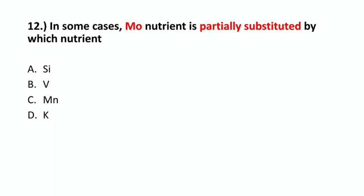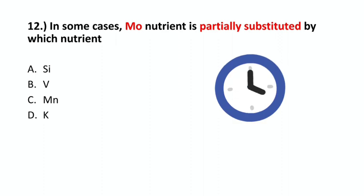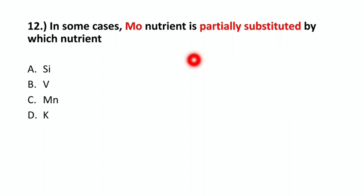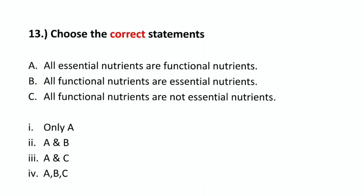Question number 12: In some cases, sodium nutrient is partially substituted by which nutrient? The correct option is option B – Vanadium.